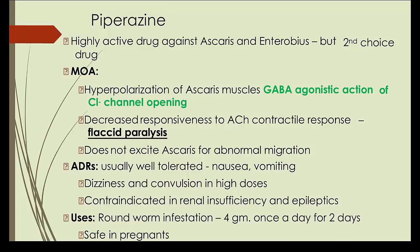Piperazine is another drug not very much used, but you need to remember its name and action. It has GABA agonistic action, causing flaccid paralysis — the opposite of pyrantel pamoate — and the worms are expelled. ADR: it is very well tolerated. Use: roundworm infestation. Remember it is safe in pregnancy. Actually, albendazole is also safe in pregnancy — you can give it in the second and third trimester, though it is better to avoid in the first trimester.